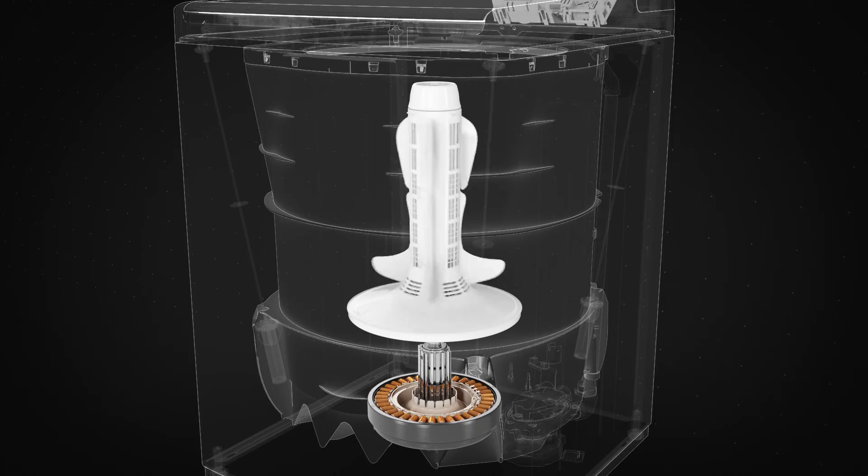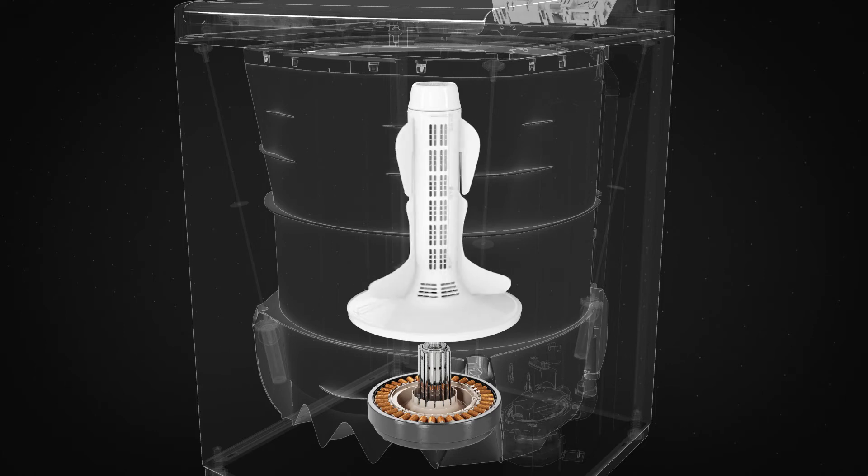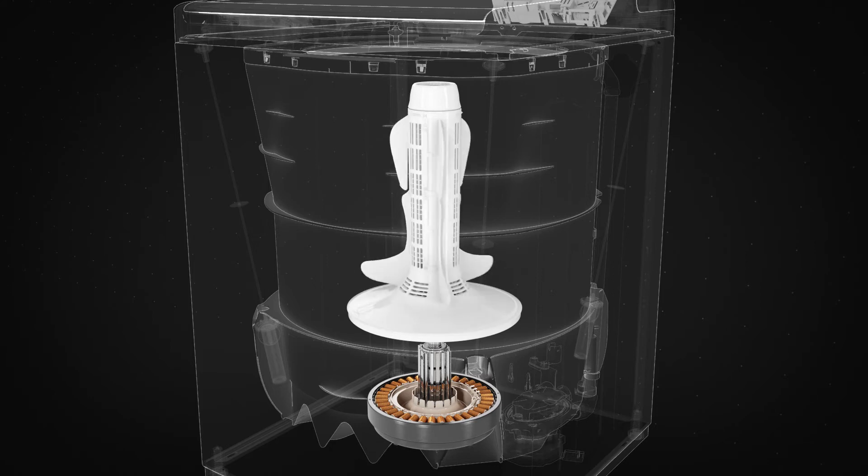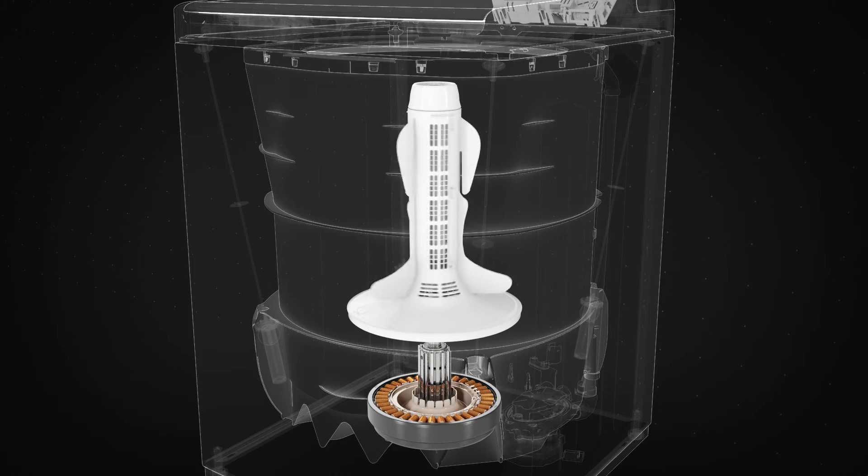The motor can vary its speed so the wash action continuously adapts to suit the type of clothing in the wash. The system has no mechanical brake, belts, pulleys, or gears, which means fewer moving parts and greater reliability.